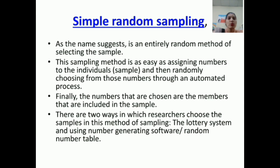Finally, the numbers that are chosen are the members that are included in the sample. There are two ways in which researchers choose the samples in this method of sampling: the lottery system and using number generating software random number table.